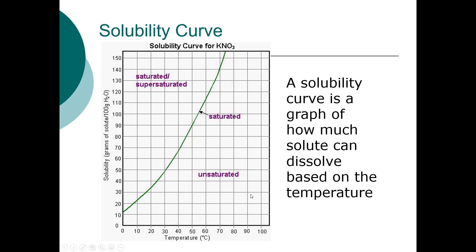Solubility curves are something you'll make and learn to read this week. The green line on the graph represents the saturation point. For KNO₃, if you have 100 grams of water at 40°C, you can dissolve about 65 grams of KNO₃. At 70°C you can dissolve 140 grams, and at 0°C only about 12 grams — solubility goes up as temperature increases.